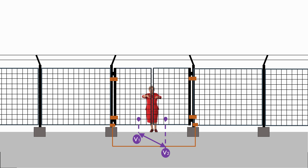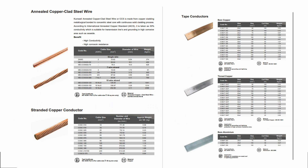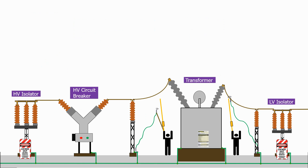The substation fence can be particularly hazardous during a ground fault condition, and we will see how we can make it safe. We will then go into detail on how we ground the various equipment inside the substation.